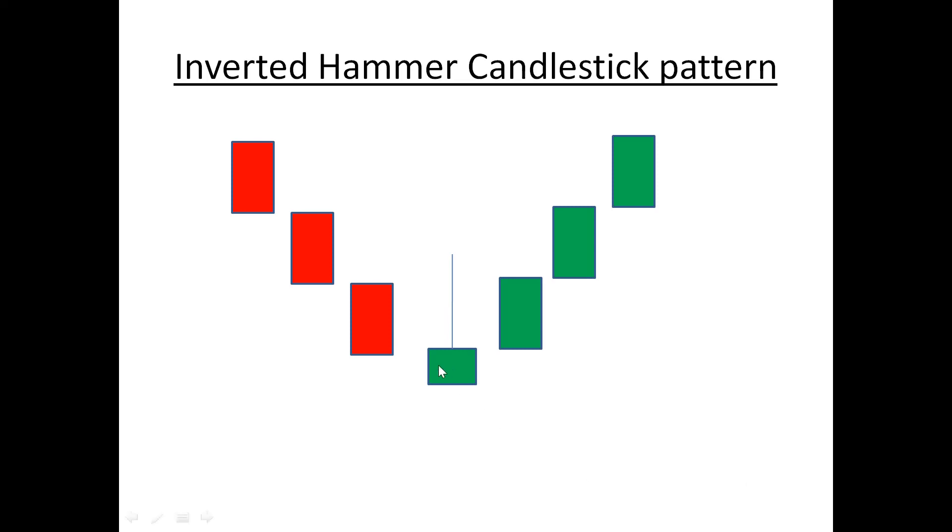In this picture you can see that this green candle is called an inverted hammer candle. It looks like an inverted hammer. The property of this candle is the upper wick is at least two times greater than the body of the candle. It may be more than that, but at least two times greater than the body.